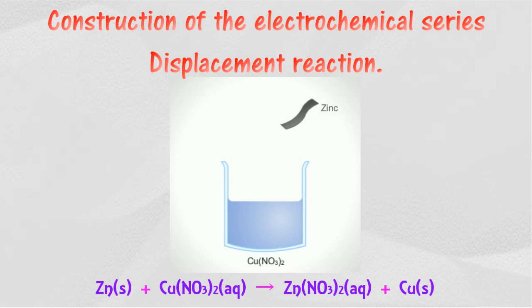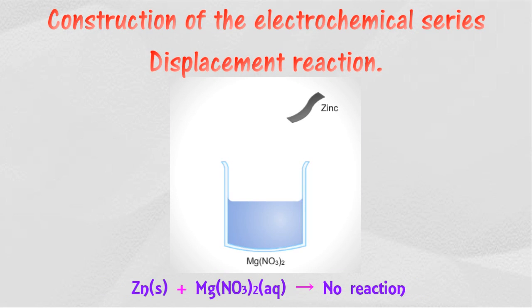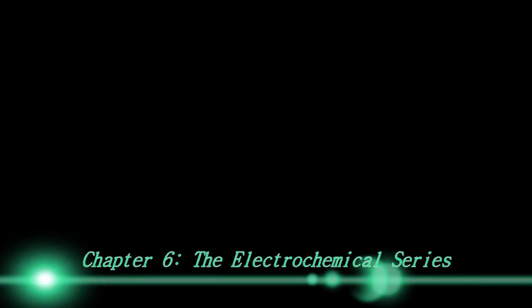In a displacement reaction, a metal that is more electropositive can displace another metal which is less electropositive from its salt solution — for example, zinc displacing copper in a copper nitrate solution, because zinc is less electropositive than magnesium.